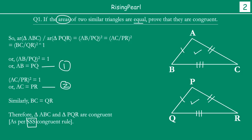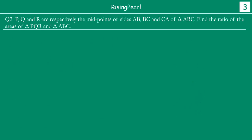So we have proved that the two triangles are indeed congruent. Let's take a look at our second question. The second question states: P, Q, and R are respectively mid points of sides AB, BC, and CA of triangle ABC. Find the ratio of areas of triangle PQR and ABC.